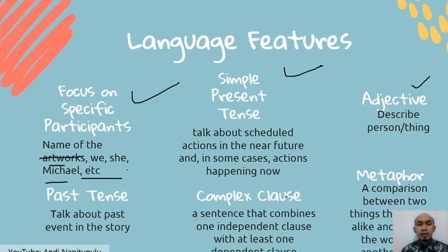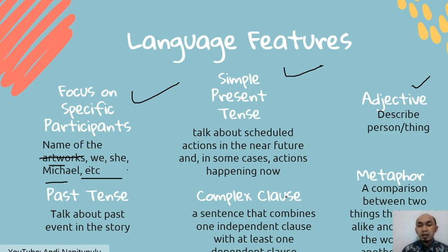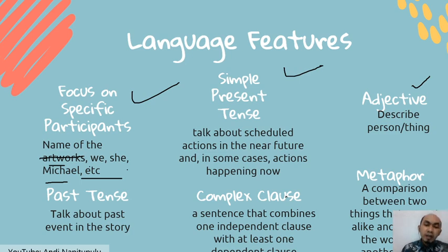Next is complex clause, which is a sentence that combines one independent clause with at least one dependent clause. We've learned about this in the previous year. And the last language feature is metaphor, which we also learned before.